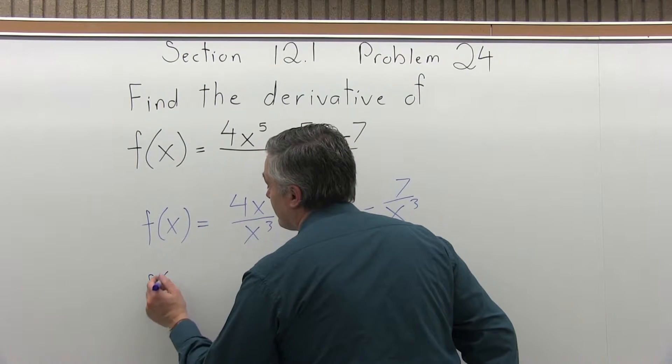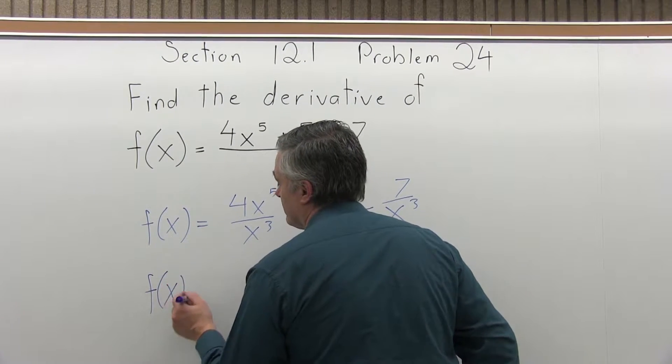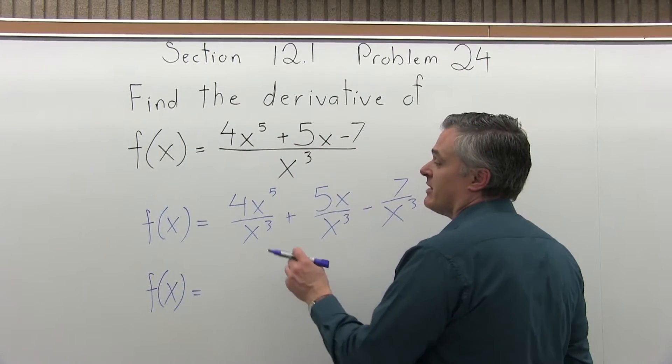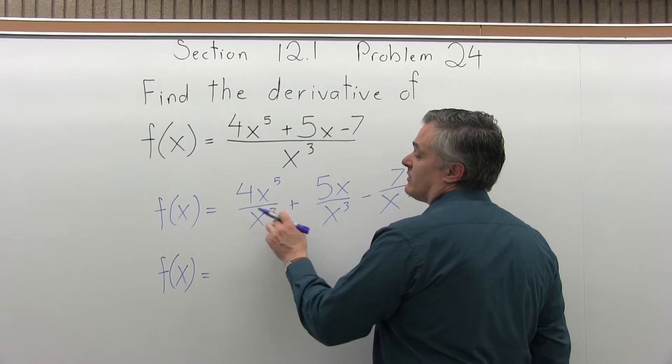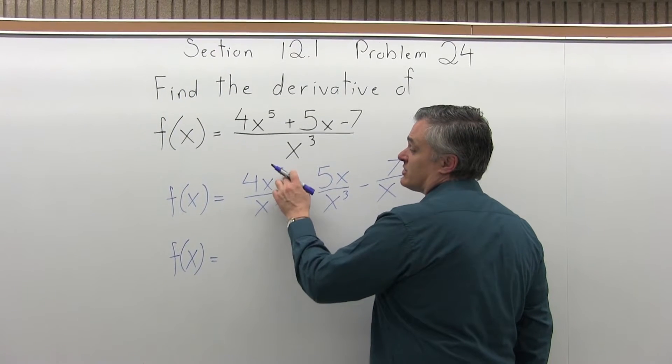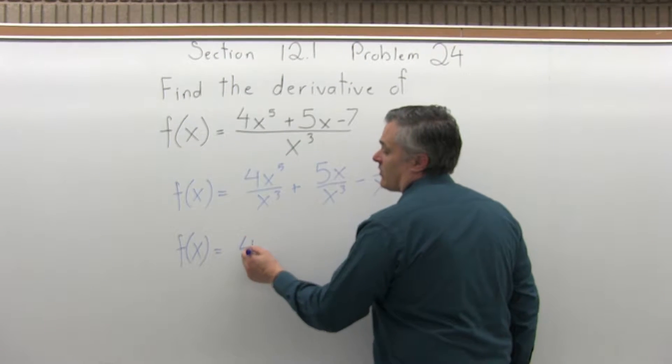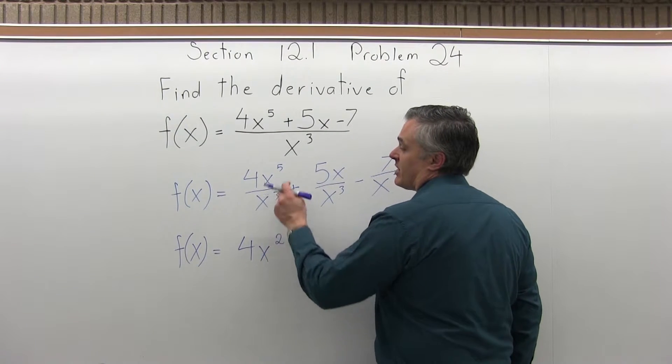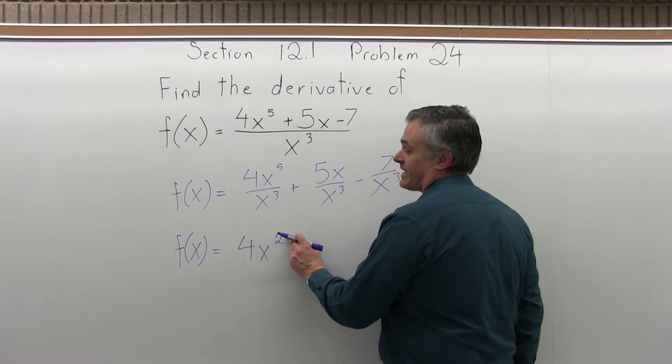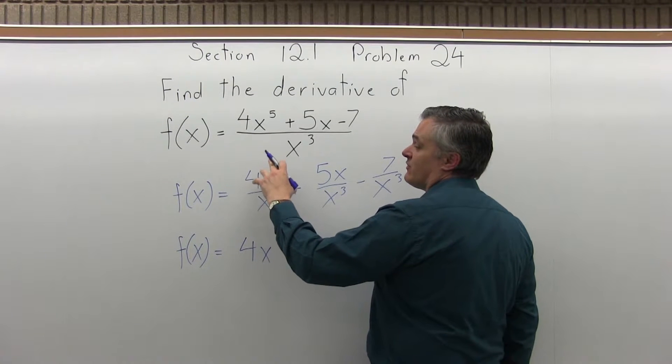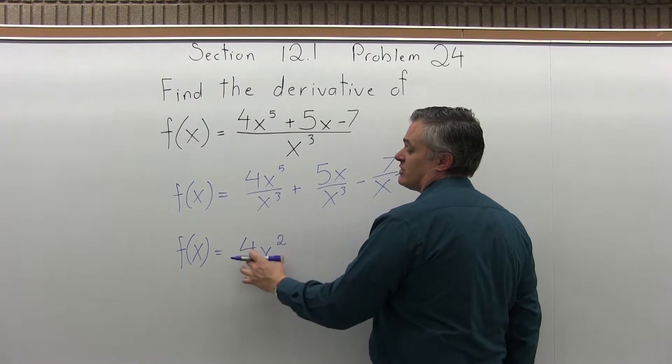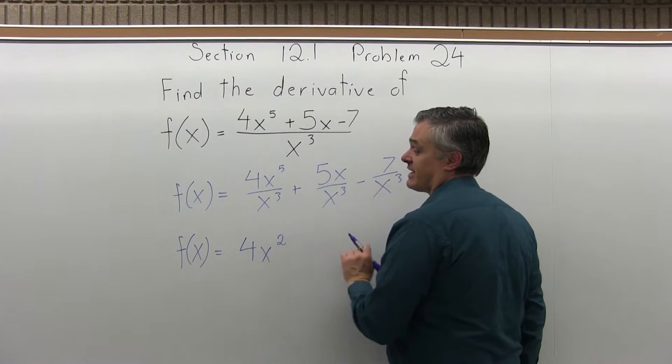Again, it's still just f of x at this point, not f prime yet. Ultimately, we'll get to that. But now 4x to the fifth over x to the third. The x to the fifth and the x to the third can reduce. I'm going to subtract these exponents. And I will have 4x to the second power. Fifth power minus third power is second power. So the first chunk, 4x to the fifth over x to the third, reduces nicely to just 4x to the second.